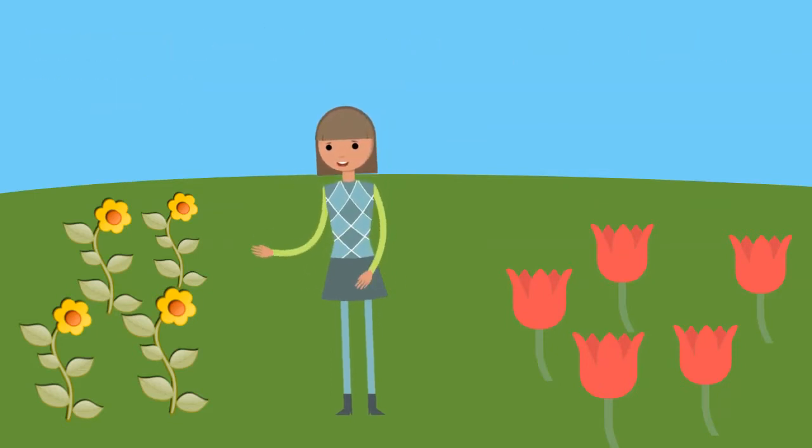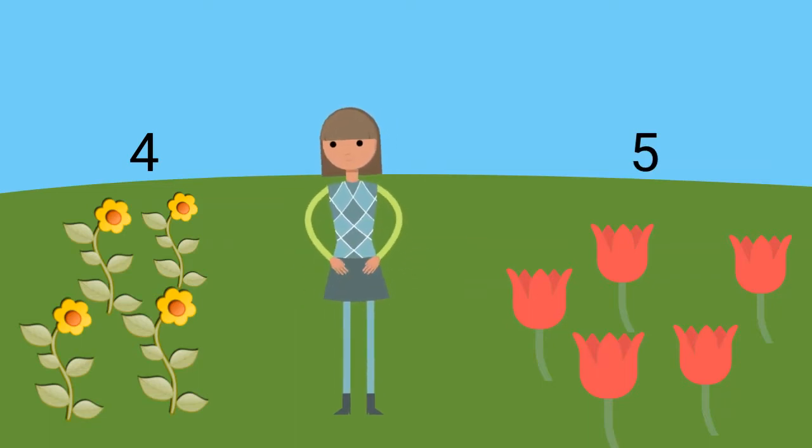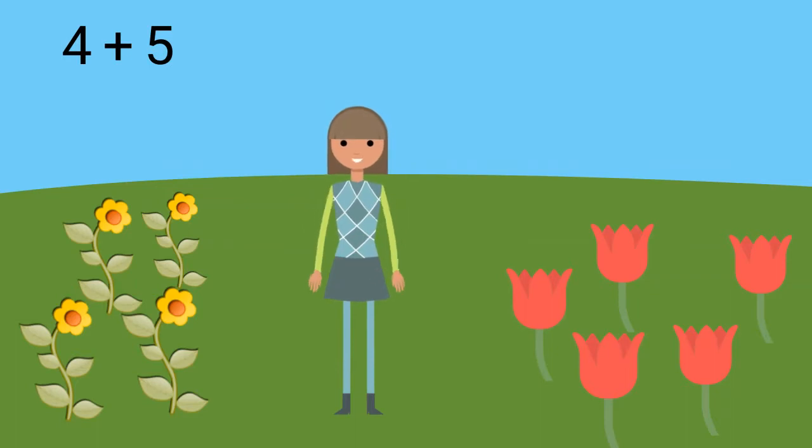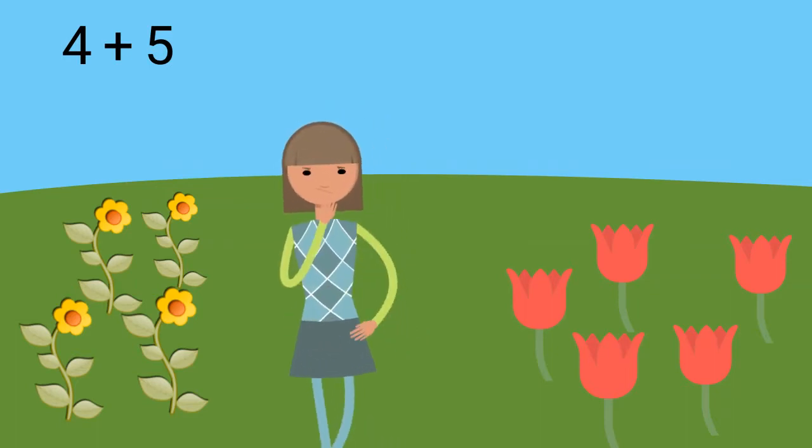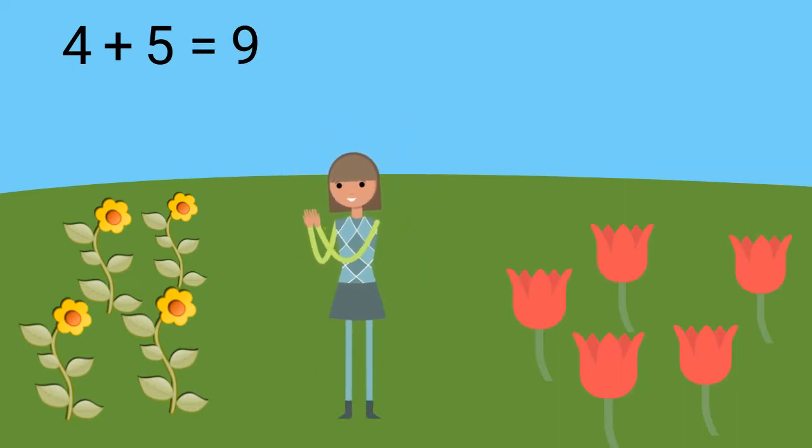There are 4 yellow flowers and 5 red flowers in this field. To find the sum, we will add 4 plus 5. What is 4 plus 5? That's right! 4 plus 5 is 9.